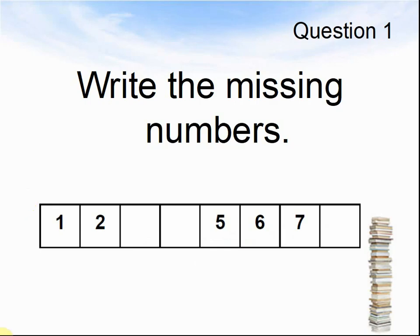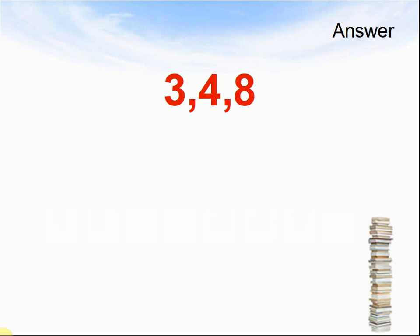Question 1. Write the missing numbers. 1, 2, something, something, 5, 6, 7, something. Pause the video until you are ready for the answers. Here come the answers. The missing numbers were 3, 4 and 8.